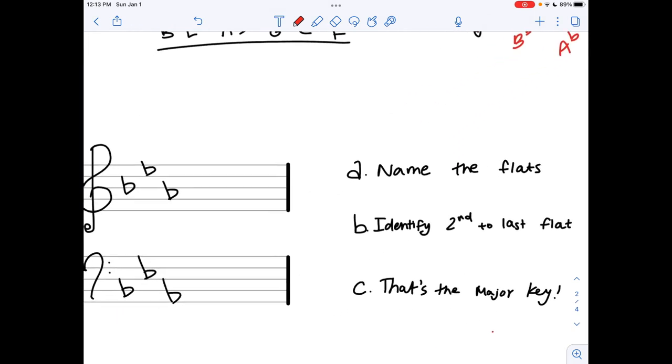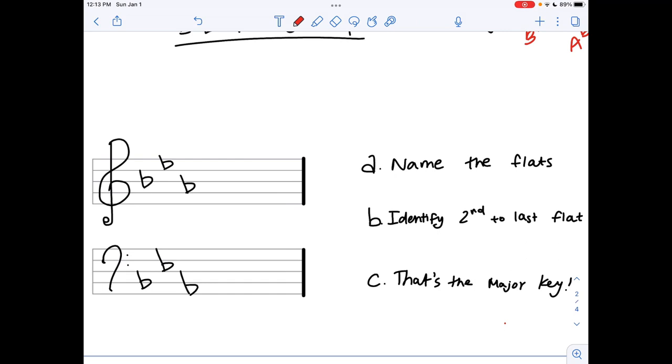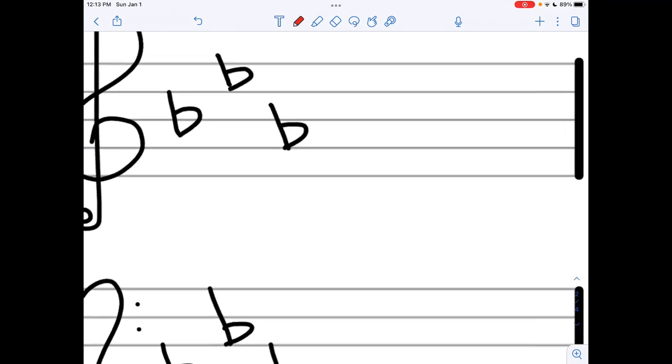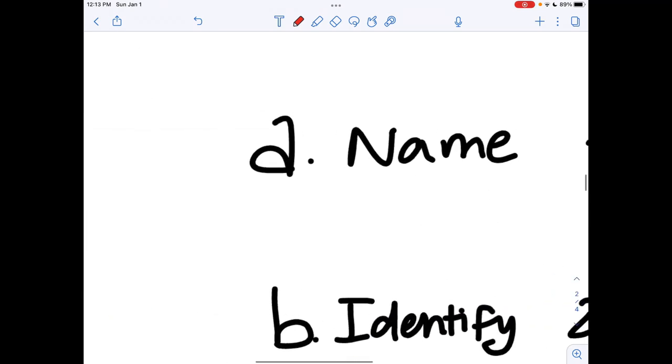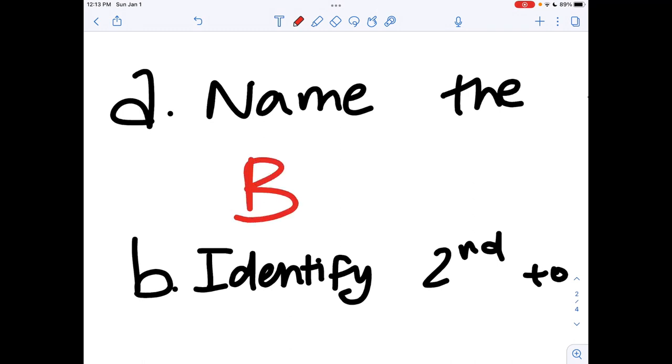Your first step in identifying a key signature when you have flats is to name all the flats. Let's look at this case. We have a B flat, E flat, and an A flat. So let's just write that over here: B flat, E flat, A flat.